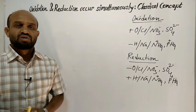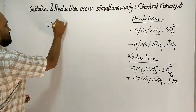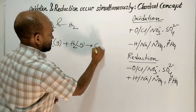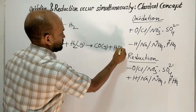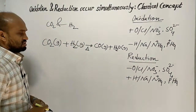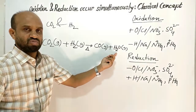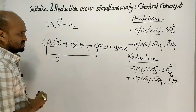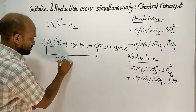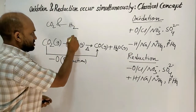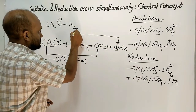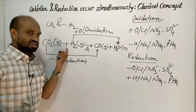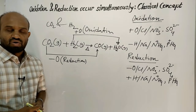Now the reaction between carbon dioxide and hydrogen. When carbon dioxide is added to hydrogen, carbon monoxide and water vapor are formed. This reaction is heated, which is why water vapor is formed. Carbon dioxide turns into carbon monoxide after the removal of oxygen — removal of oxygen means reduction. And hydrogen turns into water after the addition of oxygen — addition of oxygen means oxidation. So this is a reaction in which oxidation and reduction occur simultaneously.